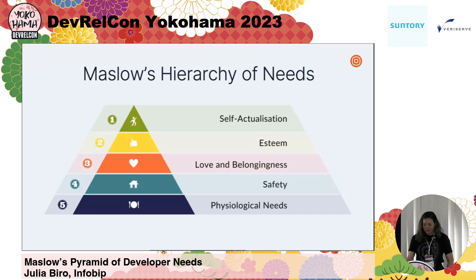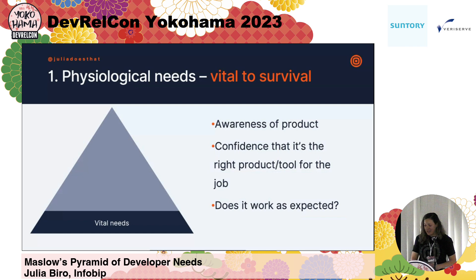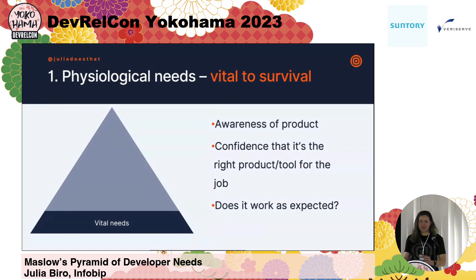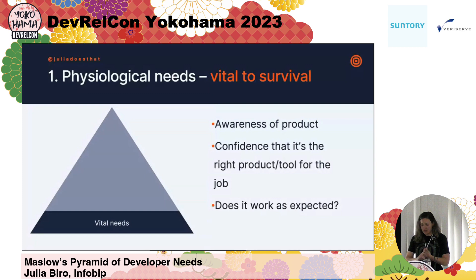Let's try to convert that into what it would mean from the perspective of what the developer needs when interacting with our products. I took physiological needs as vital to survival — really essential, as a condition for interaction. For that to happen, they need to be aware of our product: if they don't know about us, they're not going to use us. So, awareness first. Then they need to be confident that the product does what they need for solving their current problem. And then, does it work as expected — is it a reliable product?